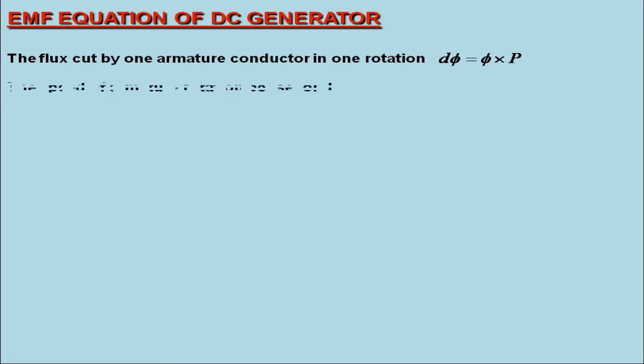Since armature rotation in one minute is N, therefore, we may calculate the speed of armature rotation per second as N/60. Now, since N/60 rotations are there in one second,